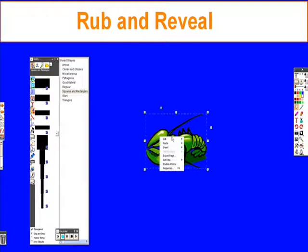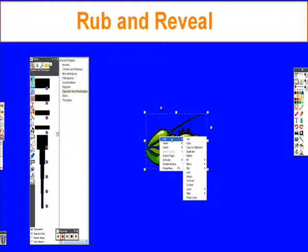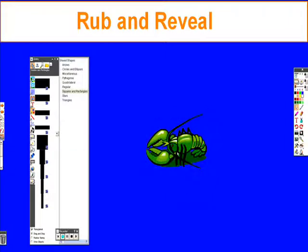But if you don't want students to accidentally come to the board and drag it out from behind what you're trying to hide it from, you can choose to lock it into place by right clicking, hitting edit, and lock. Now the little object is stuck right where we placed it.